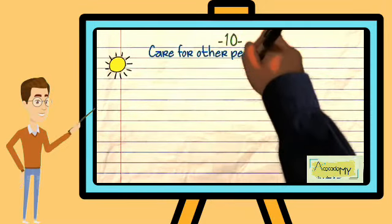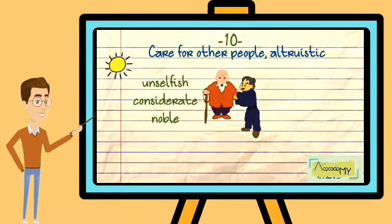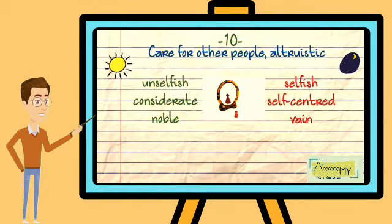If you care for other people, you're an altruistic person, which means you're unselfish, considerate and noble. And if you don't, you're selfish, self-centered and vain. These are people who think only of themselves.